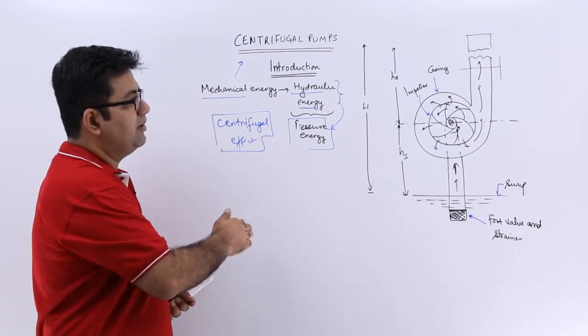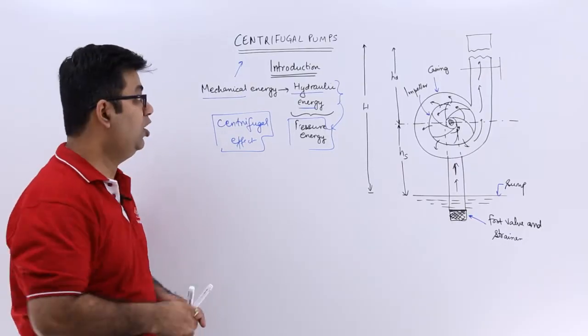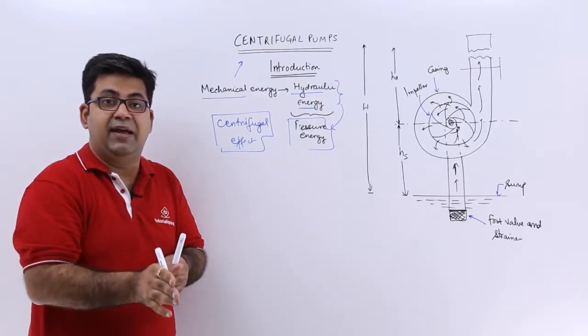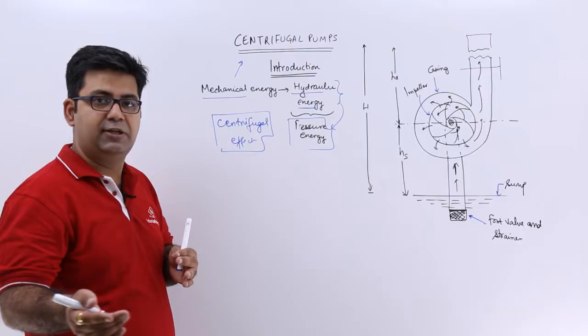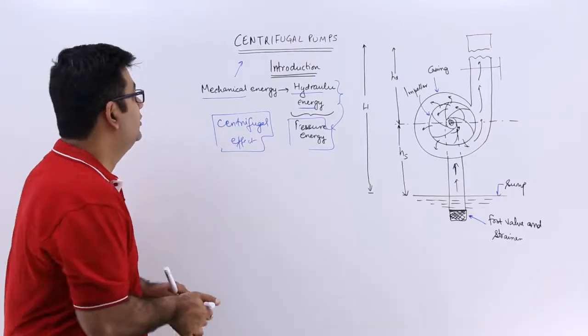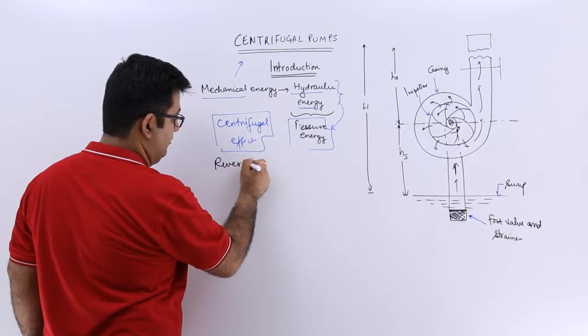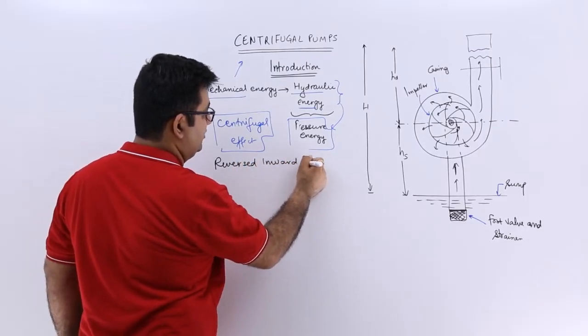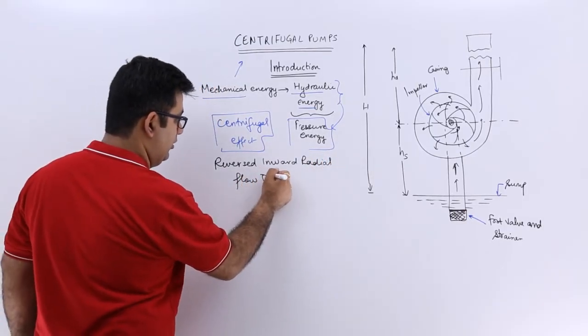In more simpler ways if you remember the radial turbines, this is nothing but a reversed inward radial flow turbine, not the actual one because turbine is an energy producing device, pump is an energy consuming device. So this would be a reversed inward flow or a reverse inward radial flow turbine.